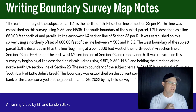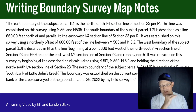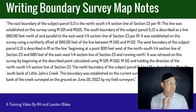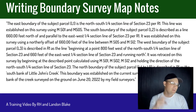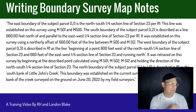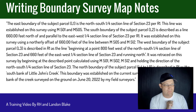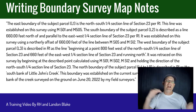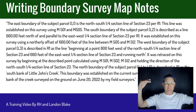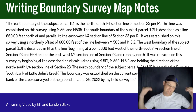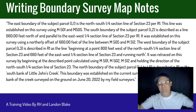Now the next segment — the south boundary. On my actual survey map each of these would be its own paragraph. The south boundary of the subject parcel, L2, is described as a line 660 feet north of and parallel to the east-west quarter section line of Section 23 per R1. I tell you how it's described — it's an offset line of the quarter section line — source document R1. How did I establish it? I established it on this survey using a northerly offset of 660 feet. But I've got to tie it back to the ground — the part of the line between M505 and M512. My south boundary is an offset of a line established with two monuments, so I'm tying that boundary per calculation back to physical evidence.